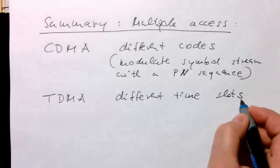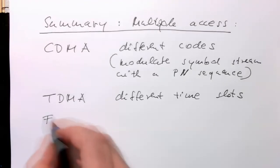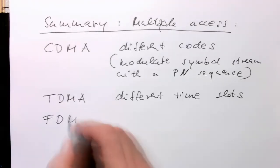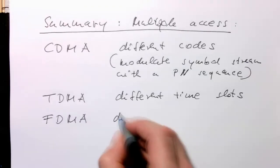That's very easy to see. And then, the last one is also easy to see. This is frequency division multiple access. We use different frequencies.